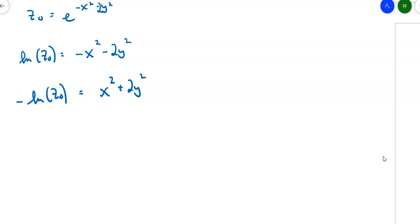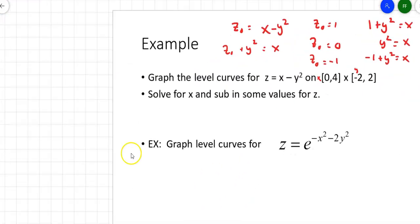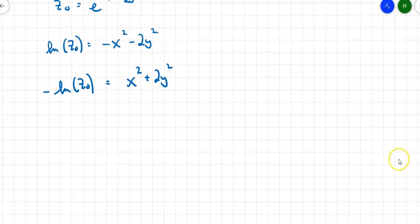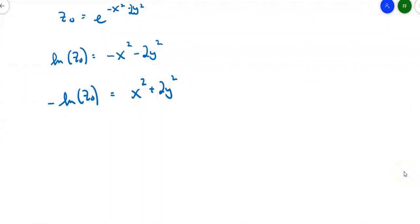For what z sub 0 values will this work? They were not defined in the original problem, so we need to see what values make sense. Suppose z sub 0 equals 1. Then negative natural log of 1 equals x squared plus 2y squared. Negative natural log of 1 is 0, so 0 equals x squared plus 2y squared. That's just the point 0, 0. What if z sub 0 is 0? Let's try it. That would not make sense because I'd have natural log of 0, which doesn't exist.